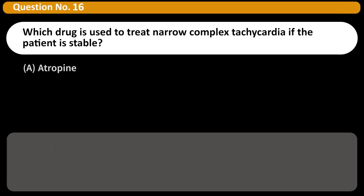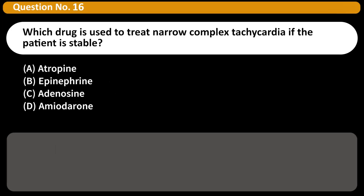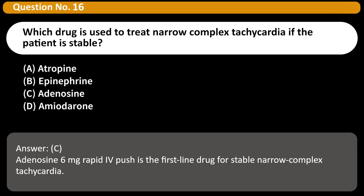Which drug is used to treat narrow complex tachycardia if the patient is stable? A. Atropine. B. Epinephrine. C. Adenosine. D. Amiodarone. Answer: C. Adenosine 6mg rapid IV push is the first-line drug for stable narrow complex tachycardia.